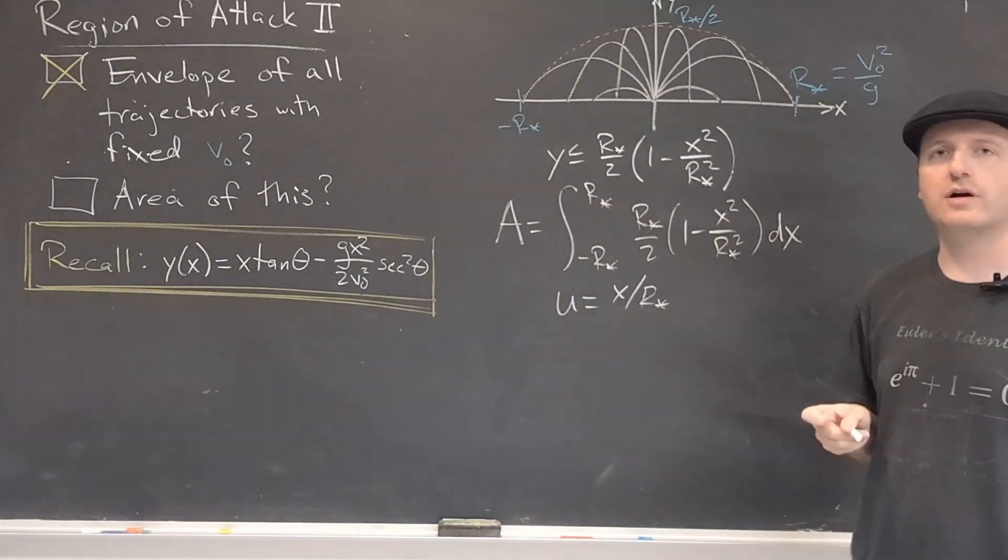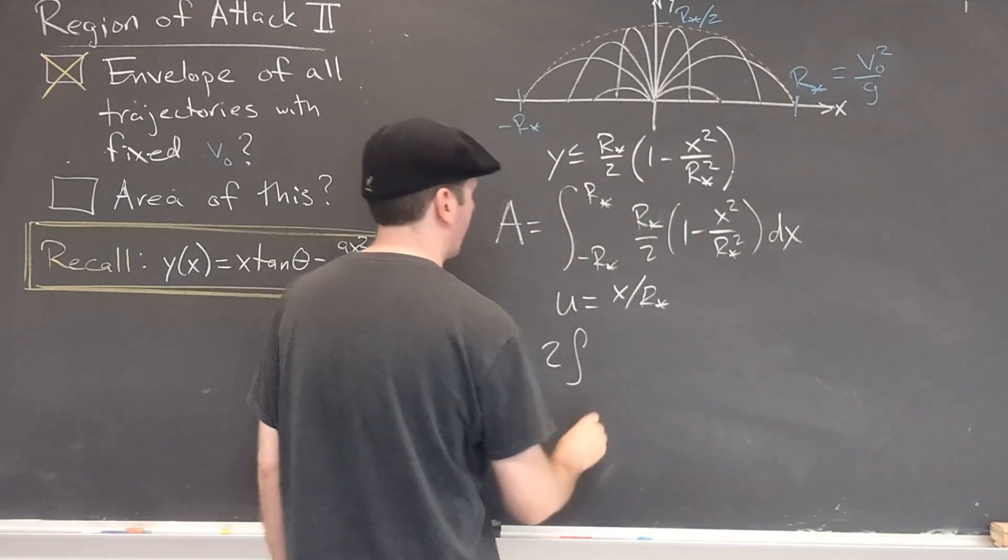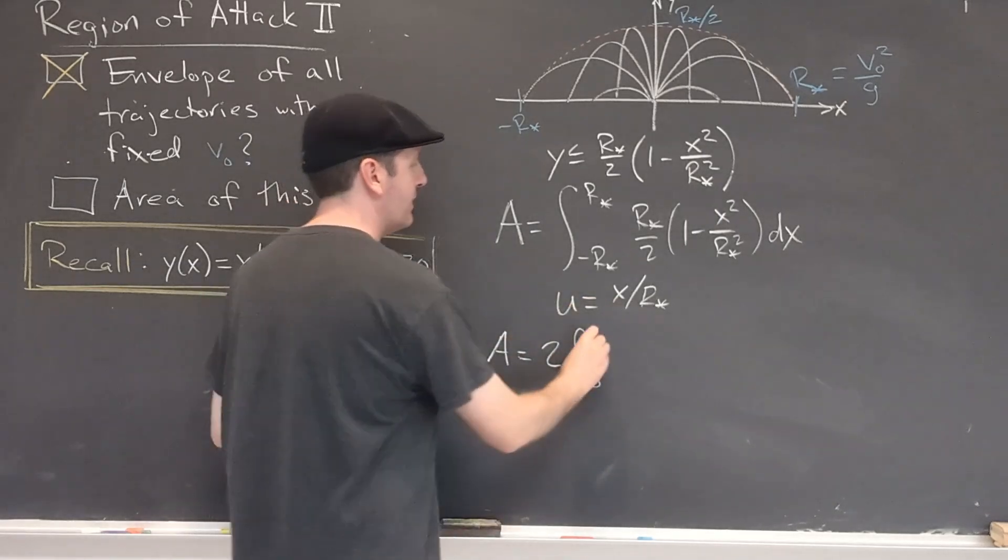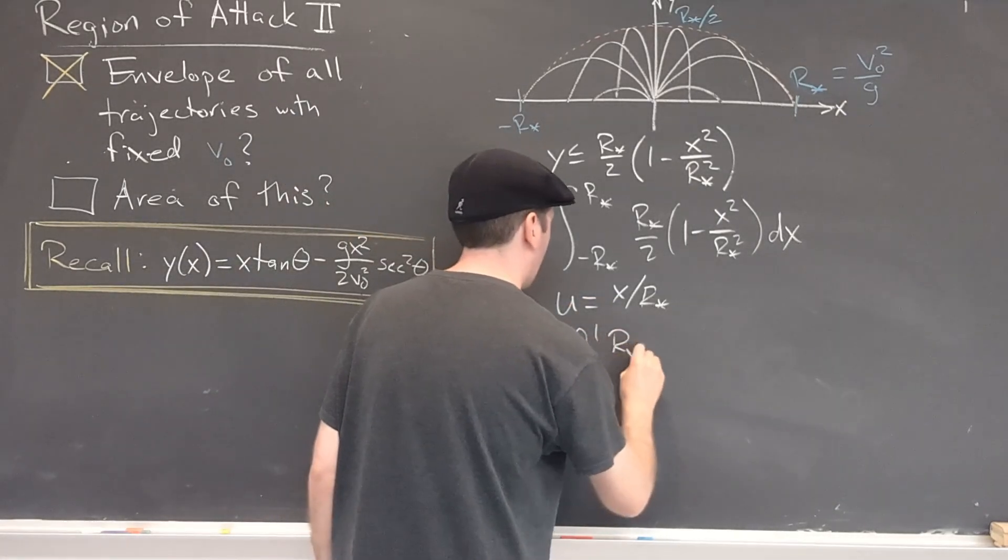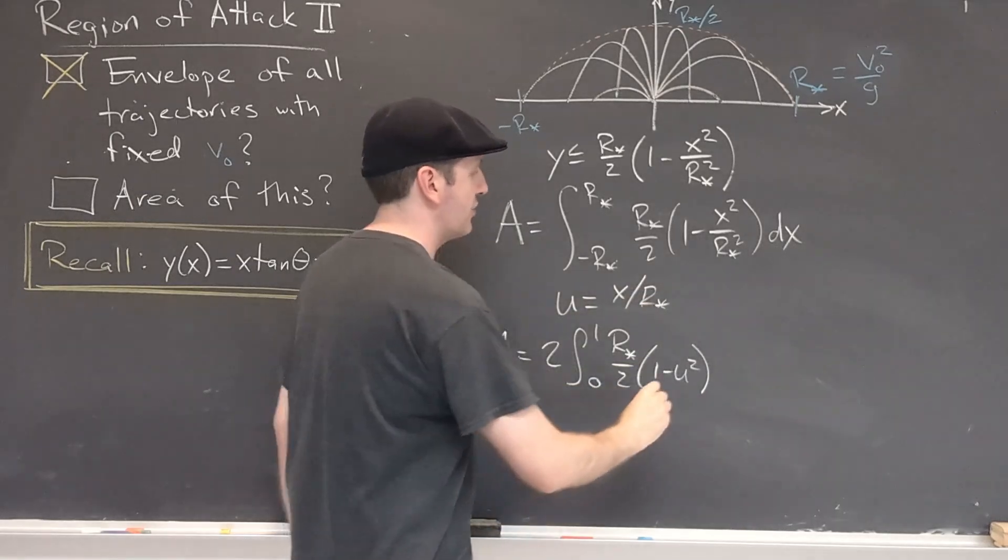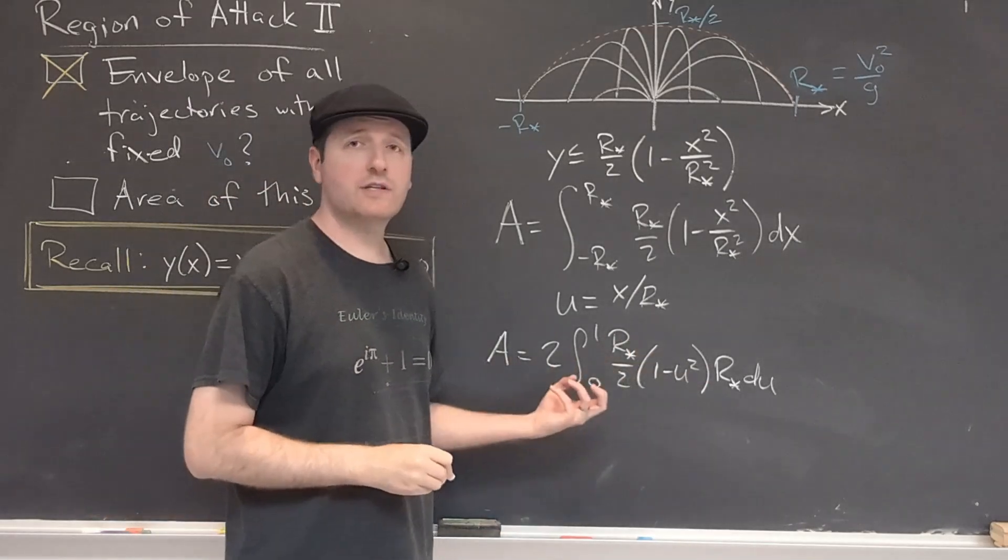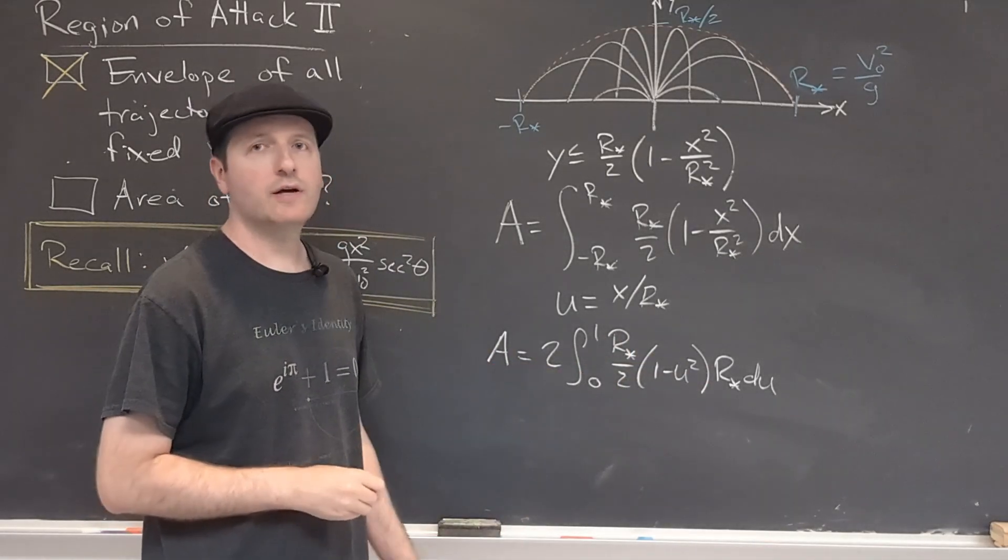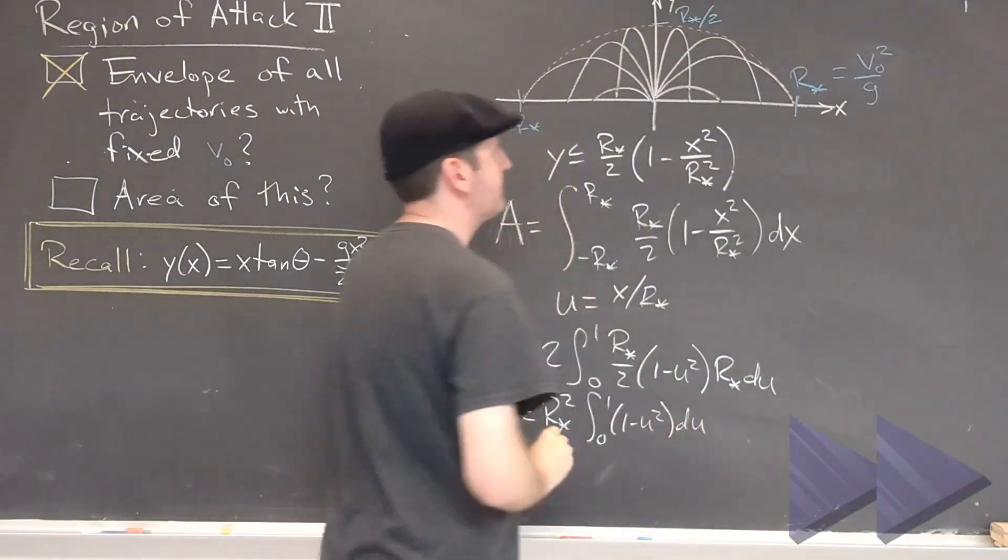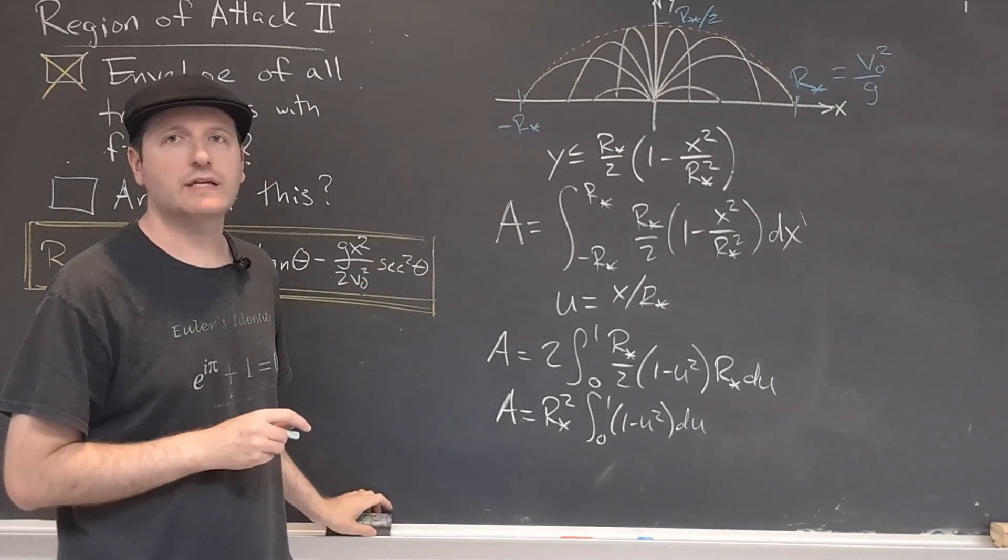And let's go ahead and use the fact that since the integrand is an even function of X, I can just go from zero to R star and double it. When X is equal to zero, of course, U will also be equal to zero. When X is equal to R star, U will be equal to one. That's convenient. Don't forget that the DX is going to pick up an additional R star. Pulling all the constants to the front and noticing that the two and the two here cancel, we can do our anti-derivative. Okay, we're pretty much out of room here. Let's bring this to the top. We'll finish off the anti-derivative.